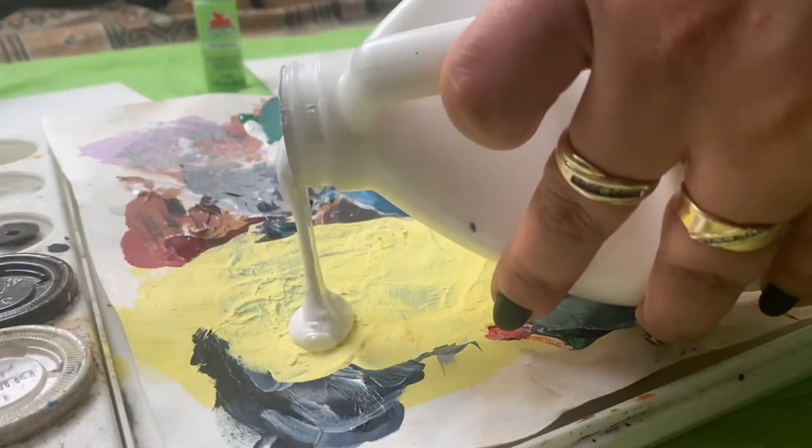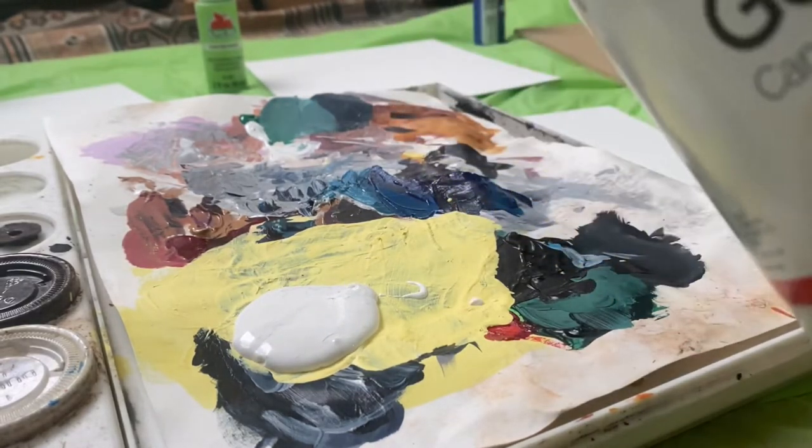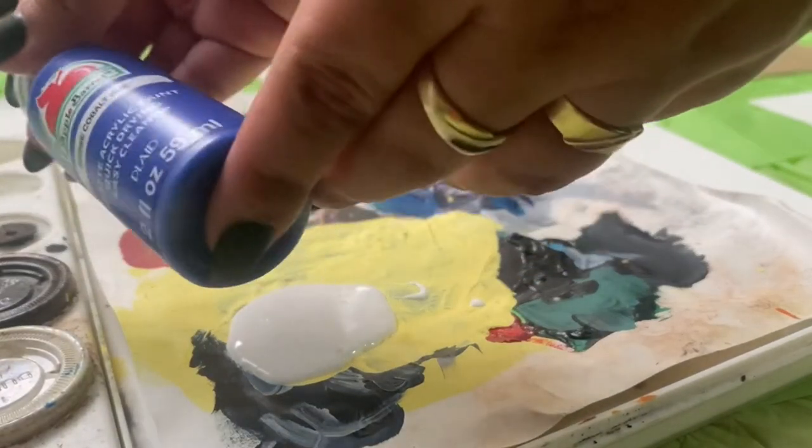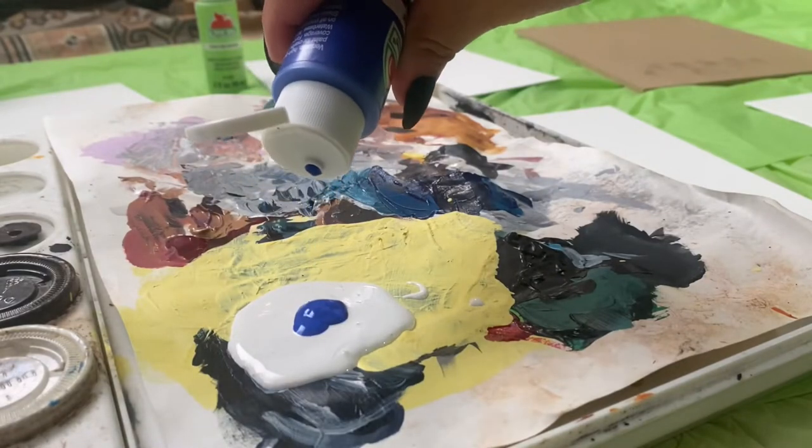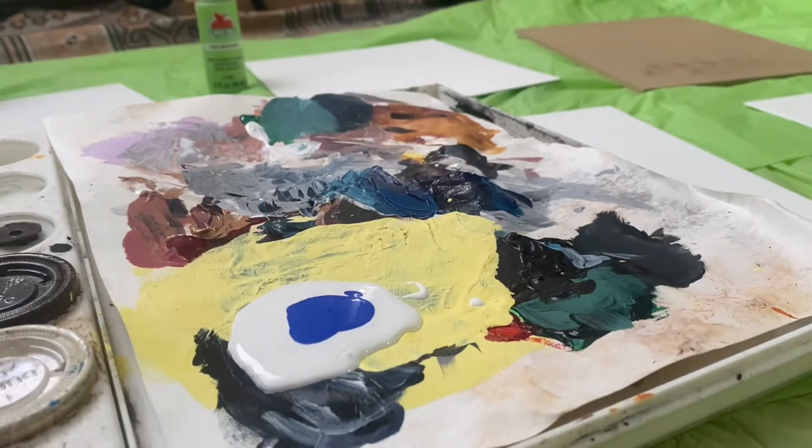Then using a flat brush, I lay down my colored gesso onto my surface using brush strokes going in one direction. I start vertical. This is super important because you want to make sure it's uniform and one side doesn't have more gesso buildup or texture than the other. I like to avoid sanding in general unless that's your thing.